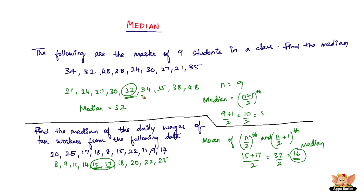Before I conclude the video, let me quickly summarize what a median is. A median is nothing but the middle value of any given data or distribution. You need to arrange it in ascending order before choosing the middle value. If the number of data is odd, you can straightaway choose the middle term as the median. But if the number of data is even, you need to choose the two middle terms and find the mean of those two terms to find the median. This ends the introduction to the median. In the forthcoming videos, let us solve problems based on median of grouped data.